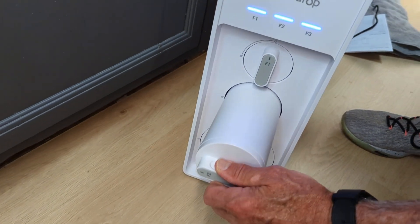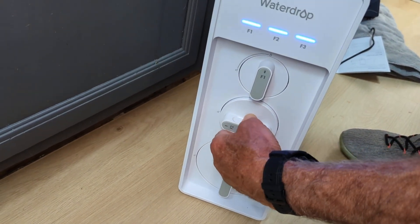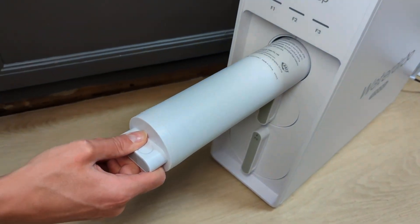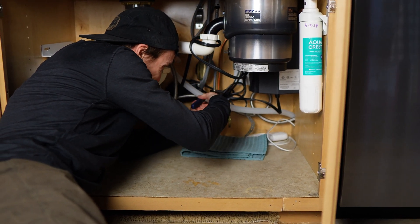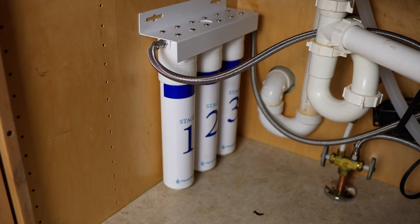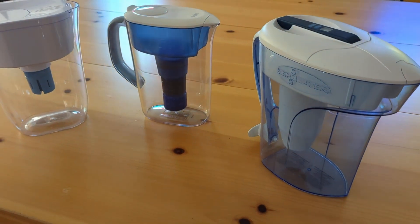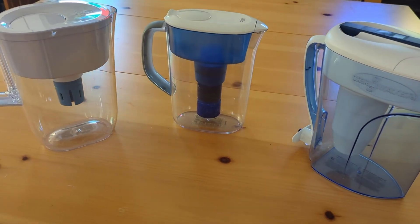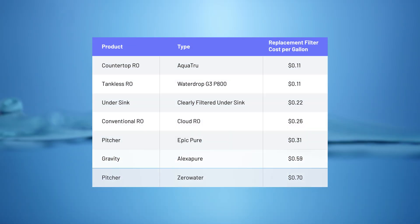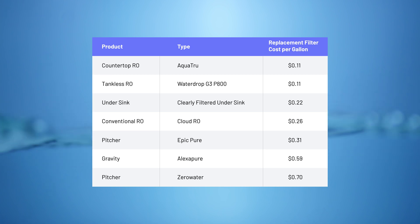Speaking of maintenance, each filter stage in an RO system has its own replacement schedule, which can typically range from 6 months to 2 years. While this might sound like a hassle, the ongoing maintenance costs for reverse osmosis systems are actually quite affordable. Water filters, on the other hand, are typically simpler and easier to install and use. Even for more advanced under-sink systems, you typically won't need to deal with a separate faucet or drain line. Most filtration systems have just one or two filters to replace, although they're not always cheaper to maintain compared to RO systems.